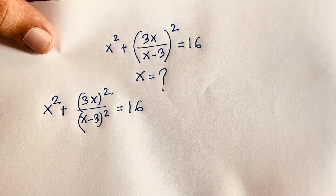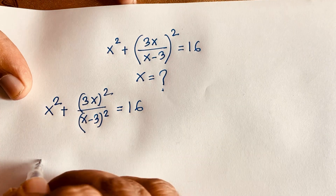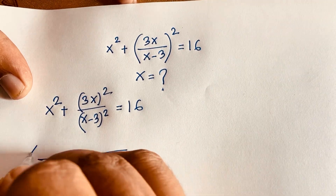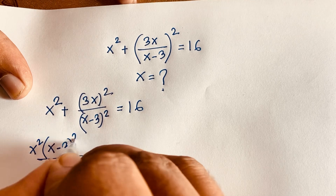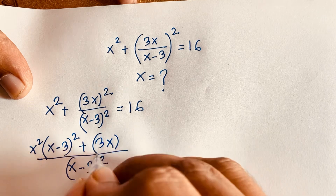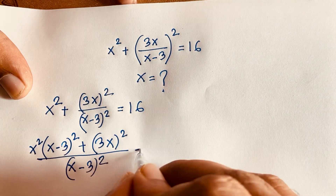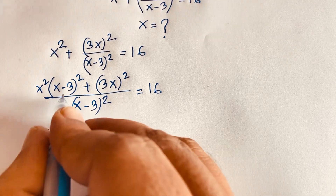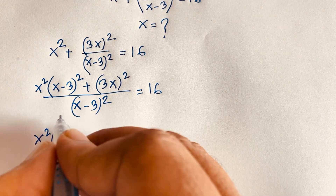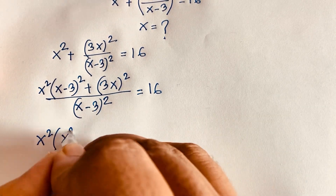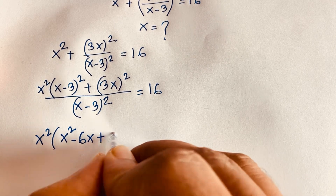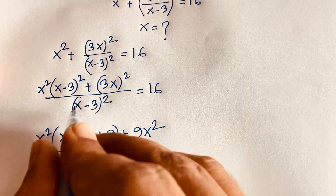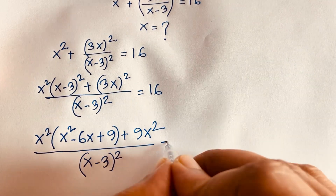The least common value is (x - 3)². So this becomes x² times (x - 3)² plus (3x)², because dividing gives 1, and this is equal to 16. We know that (a - b)² = a² - 2ab + b², so (x - 3)² = x² - 6x + 9, and (3x)² = 9x². This over (x - 3)² equals 16.